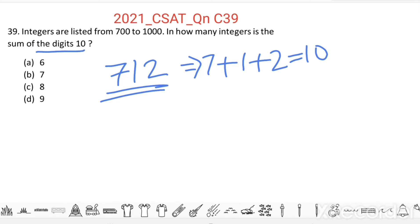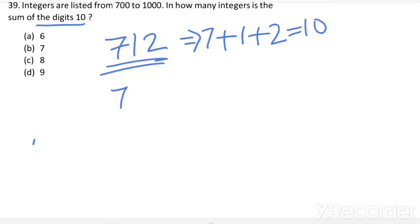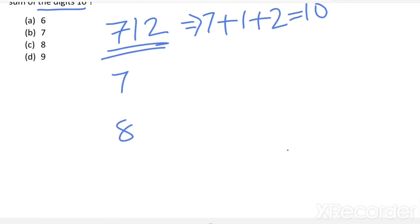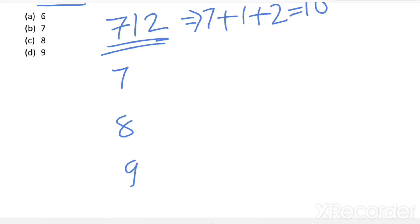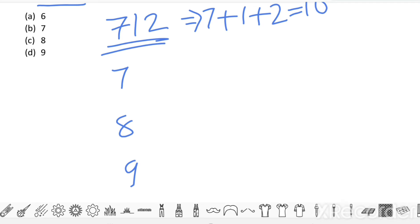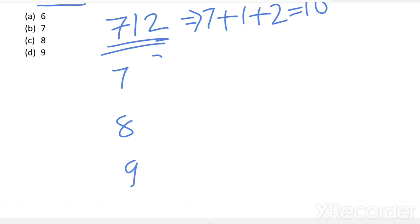From 700 to 1000, the possible hundreds digits are 7, 8, and 9. To get the sum of digits equal to 10, we find the possible tens and units digits for each case. For hundreds digit 7, one combination is 7, 3, 0.